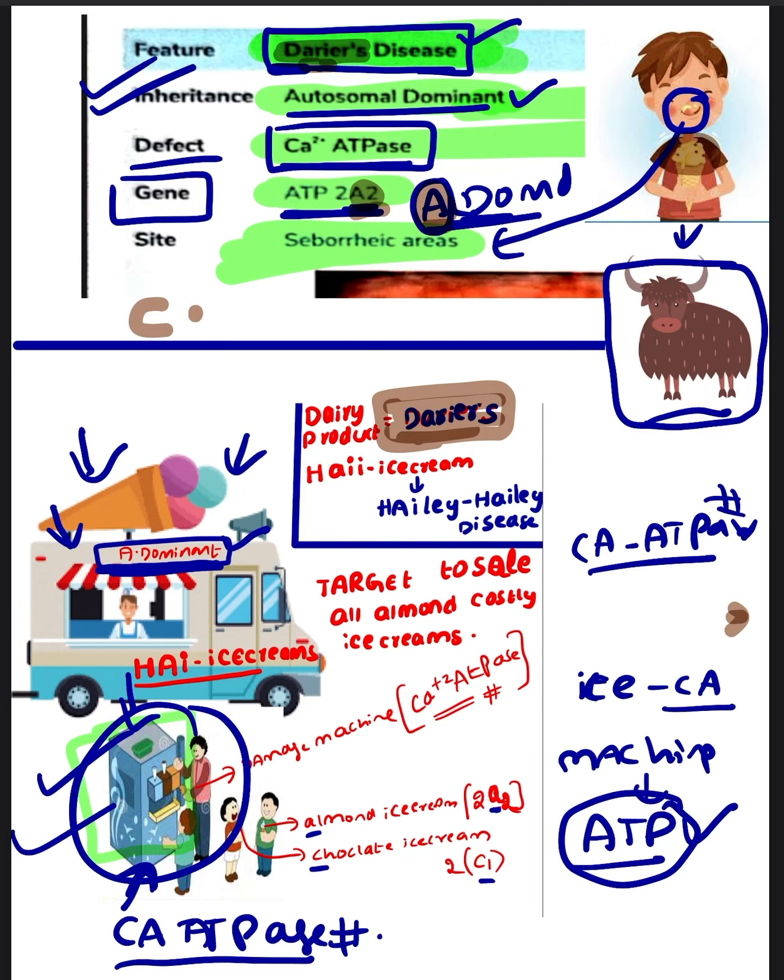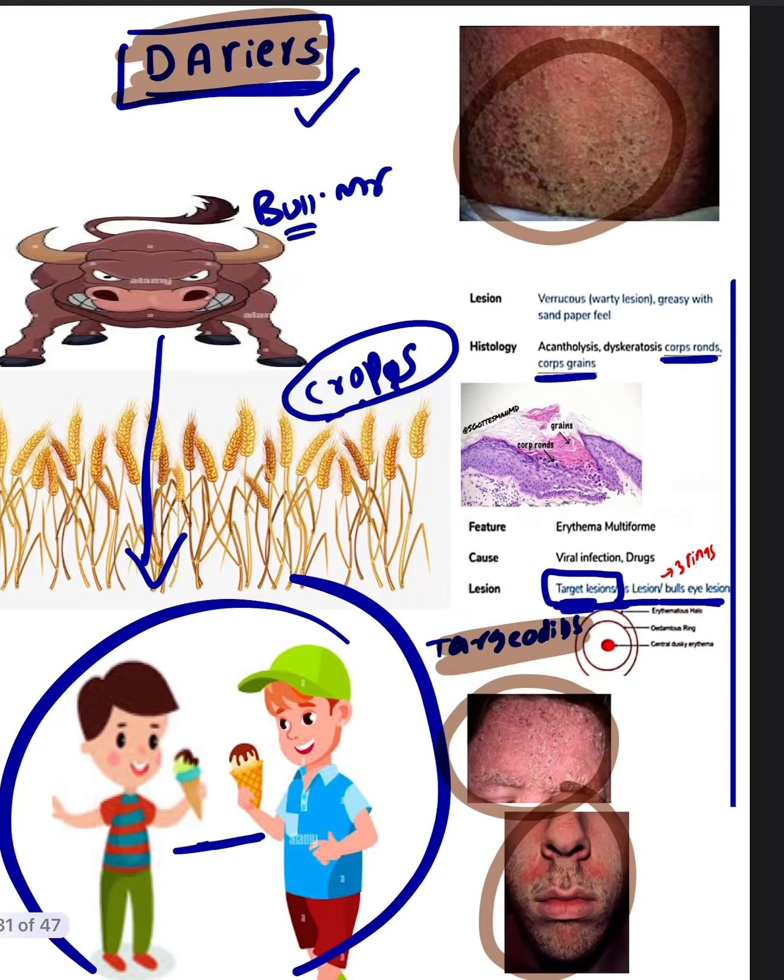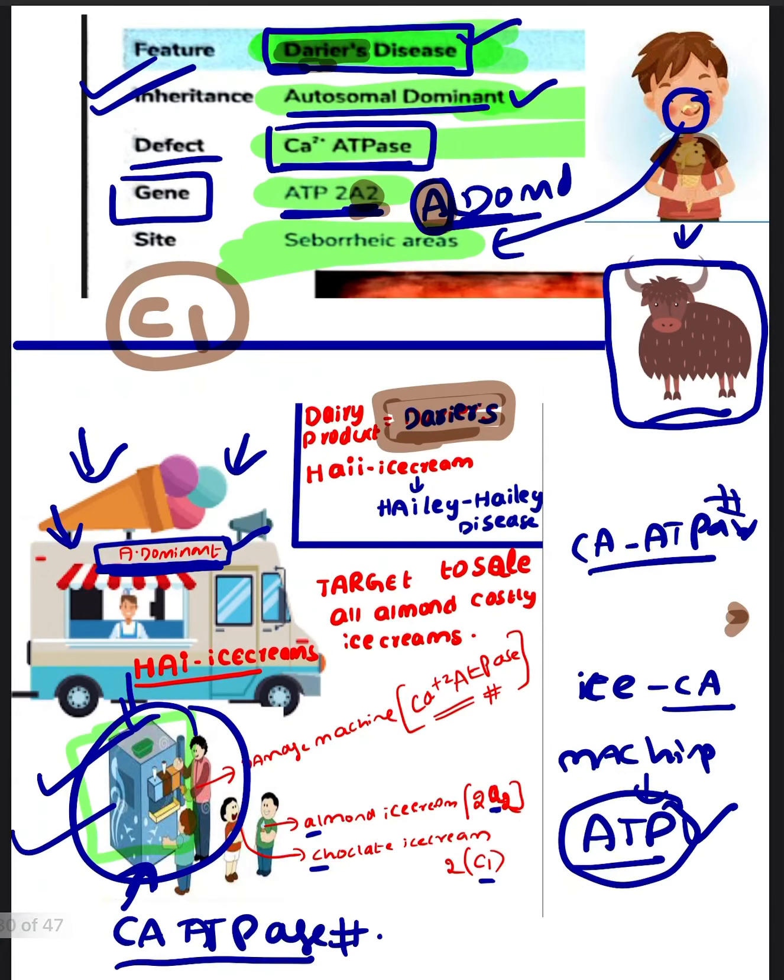A is involved in Darier's disease, whereas C1 means chocolate Hailey, which is involved in Hailey disease. See all the ice cream is around his mouth only, which means this is a seborrheic area. So in Darier's disease, seborrheic areas are involved more, whereas in Hailey disease, intertriginous areas are involved.